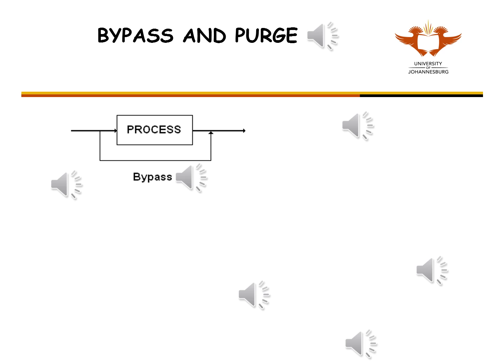A bypass is a stream taken off the feed of a process and added to the product stream of that process. In doing this, some of the feed is not processed, but bypasses the process.